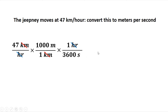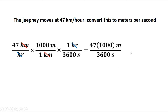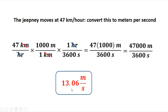Simplifying: 47 times 1,000 over 3,600. That's 47,000 divided by 3,600, which equals 13.06 meters per second. Therefore, 47 kilometers per hour is equivalent to 13.06 meters per second. That's how to do measurement conversion.